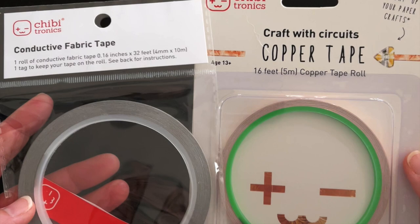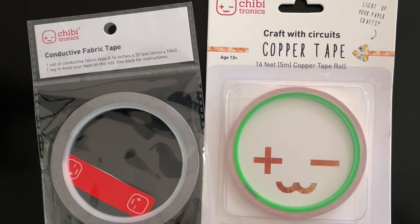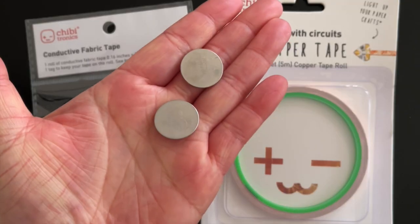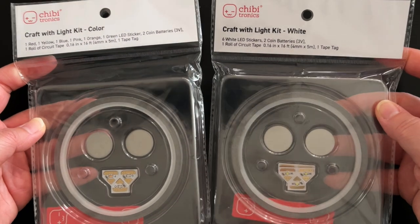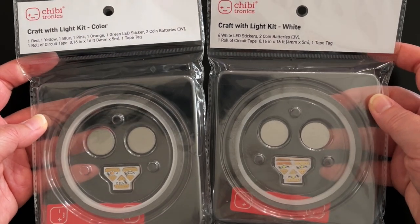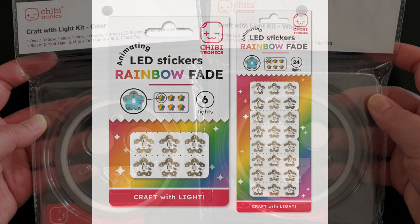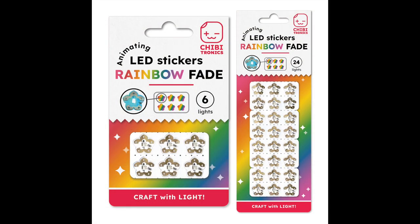You will need circuit tape, either conductive fabric tape or copper tape, and a flat 3V coin cell battery to create a light-up circuit. We recommend purchasing our Craft with Light kits that come with batteries and fabric tape, as well as our original LED stickers. Circuit tape and batteries are not included with the animating LED sticker packs.